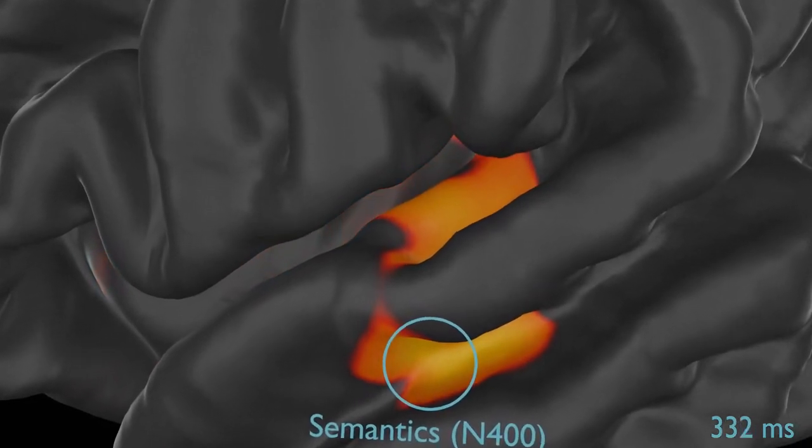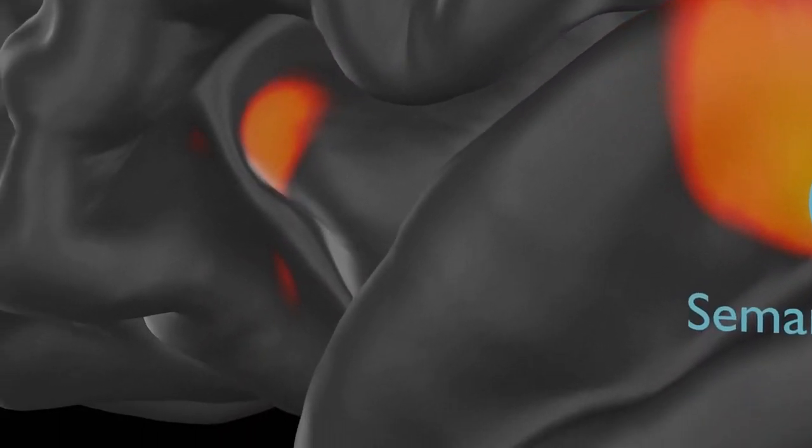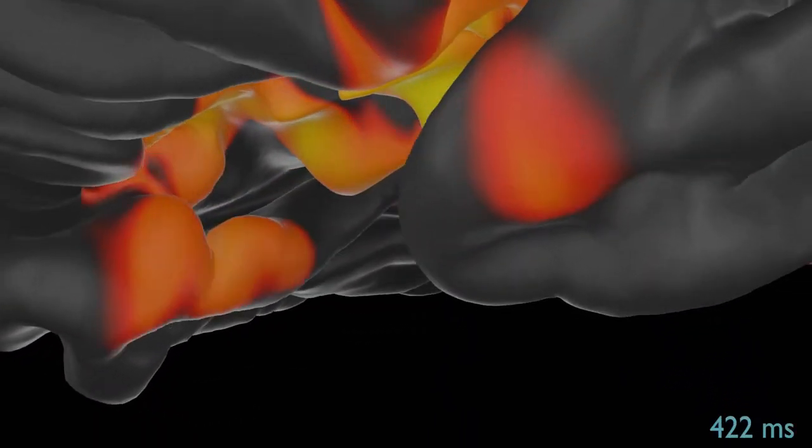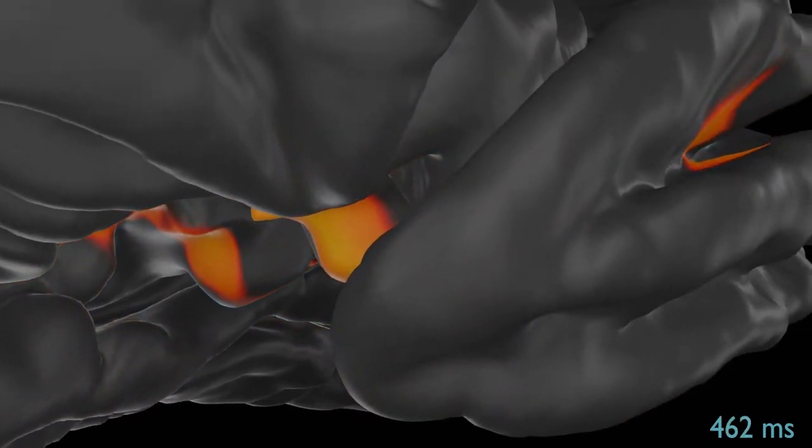And to be honest, we still know quite little about this. But what I can tell you is that it is a complicated process that involves millions and millions of neurons throughout the entire brain working together. So we're probably going to need a bit more than just pen and paper to figure this out.